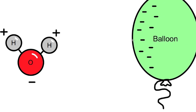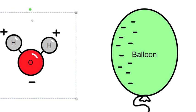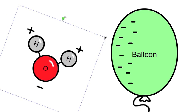If we bring this up next to the balloon, the polarity causes the oxygen to repel from the balloon and the hydrogens to attract to it. Because opposite charges attract, the positives attract to the negative balloon.